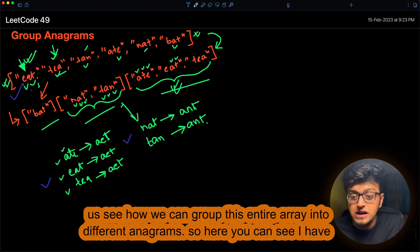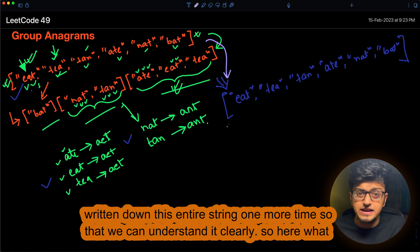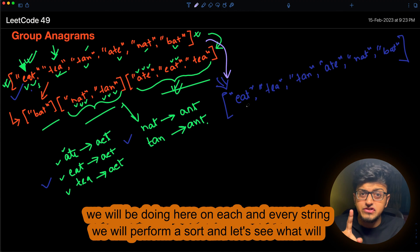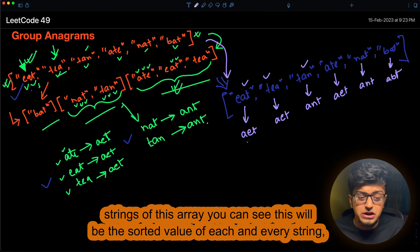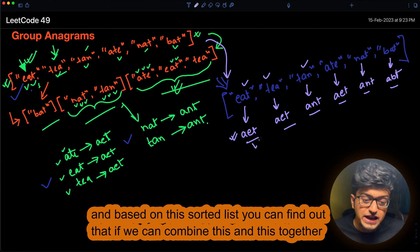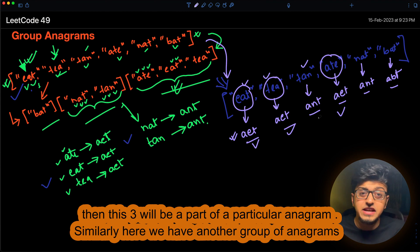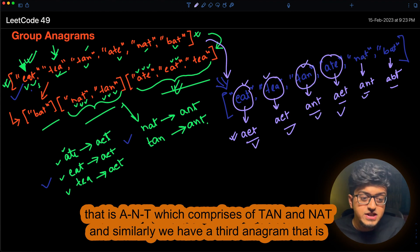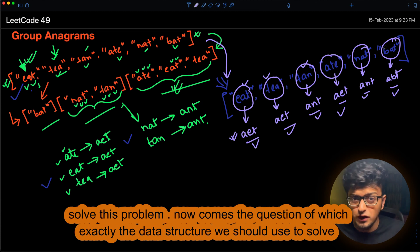Let's apply this to the entire array. After sorting each string, we can see which strings produce the same sorted value. Strings sharing the same sorted form belong to the same anagram group. For instance, 'eat', 'tea', and 'ate' all give 'aet'; 'nat' and 'tan' give 'ant'; and 'bat' gives 'abt'. So the sorted string becomes a natural grouping key.